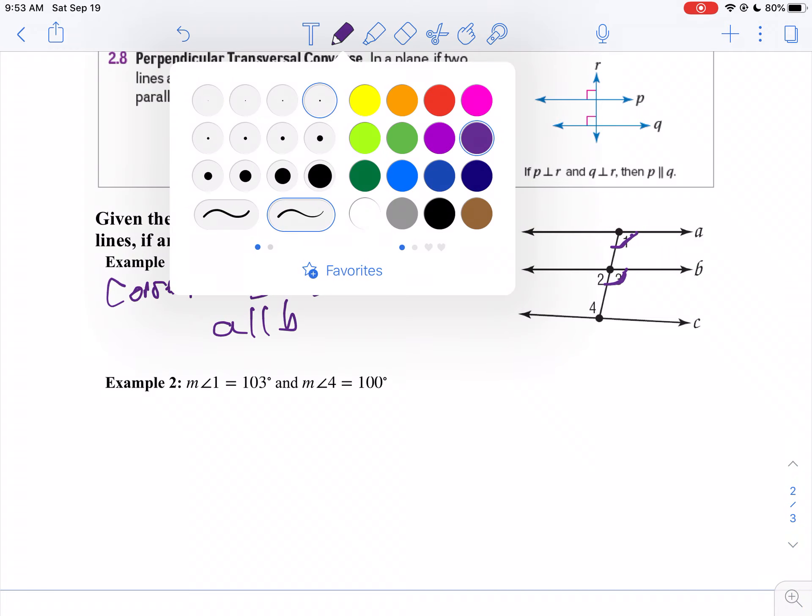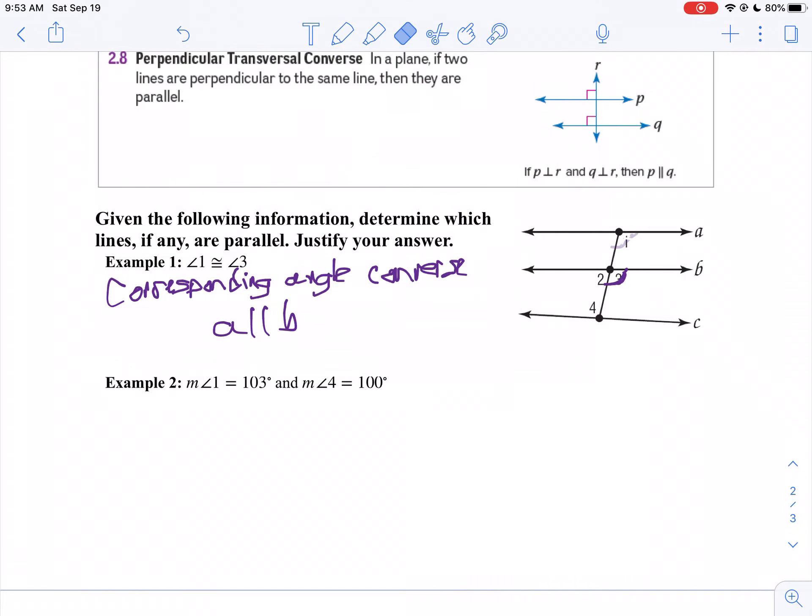Let's take a look at example two. So on example two, we're told angle 1 is 103 degrees, angle 4 is 100 degrees. Notice 103 does not equal 100, nor is it supplementary. So we can tell nothing.